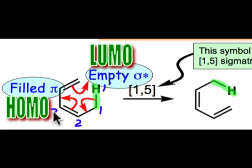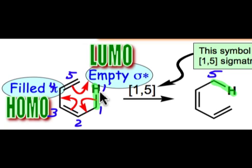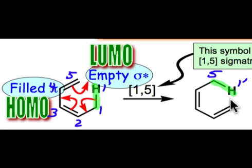We'll continue numbering the carbon system until we get to the other position — it's a 5. We recognize that at hydrogen this 1' atom doesn't have any further connectivity, and so it's a 1' over here in the product. The order of the reaction is a 1,5-sigmatropic rearrangement.